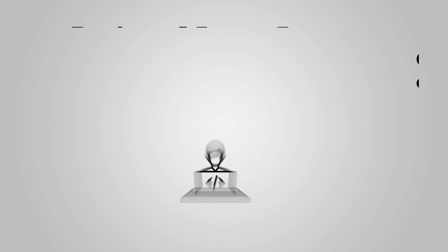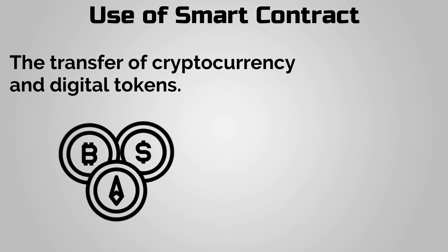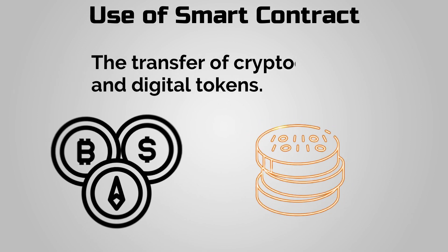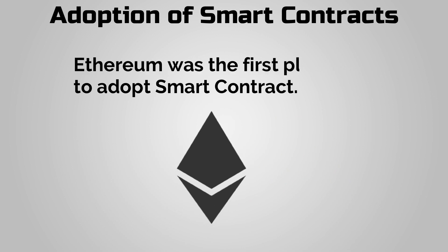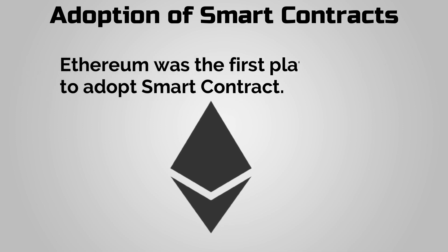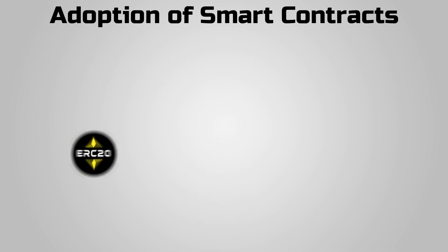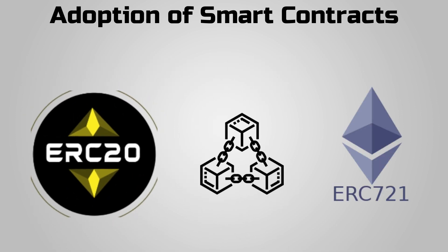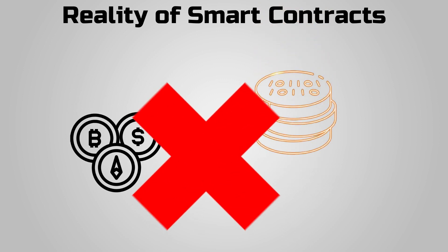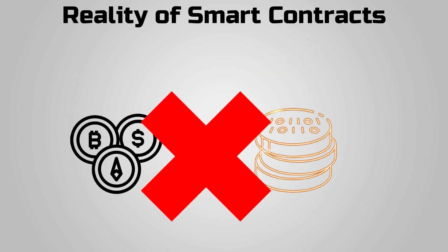Transfer of cryptocurrency and digital tokens can be done using smart contracts. Ethereum, one of the most popular cryptocurrencies, was the first platform to adopt smart contracts in practice, through its blockchains ERC-20 and ERC-721. However, smart contracts are not tokens, and they are not cryptocurrencies.